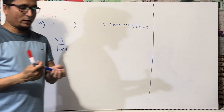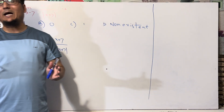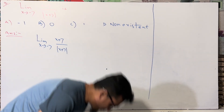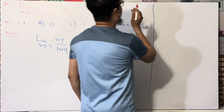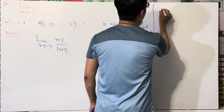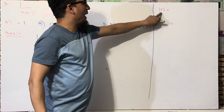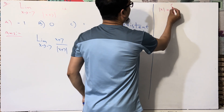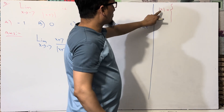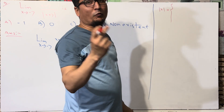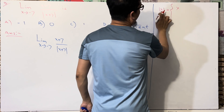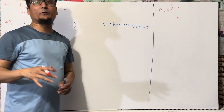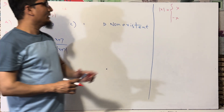Before solving this question I am going to tell you some concepts of the modulus function, or absolute function. In absolute function, if you have |x|, this is the absolute or modulus function. Absolute always has two forms: the first one is just x, and the second one is minus x. Absolute always gives you a positive value — the range is always positive.